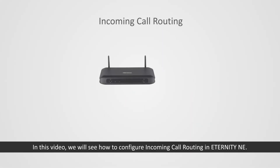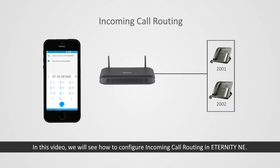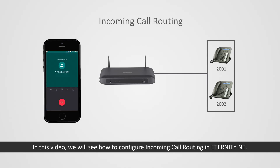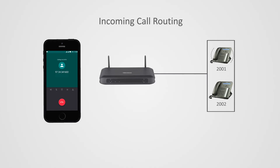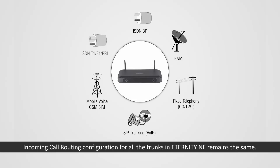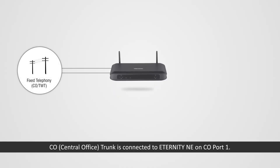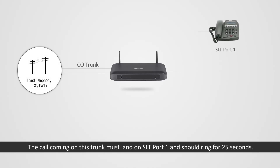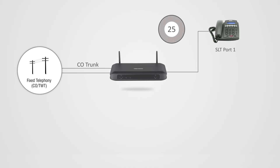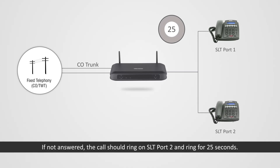In this video we will see how to configure incoming call routing in Eternity NE. Incoming call routing configuration for all the trunks in Eternity NE remains the same. Consider a scenario: a CO or central office trunk is connected to Eternity NE on CO port 1. The call coming on this trunk must land on SLT port 1 and ring for 25 seconds. If not answered, the call should ring on SLT port 2 and ring for 25 seconds.